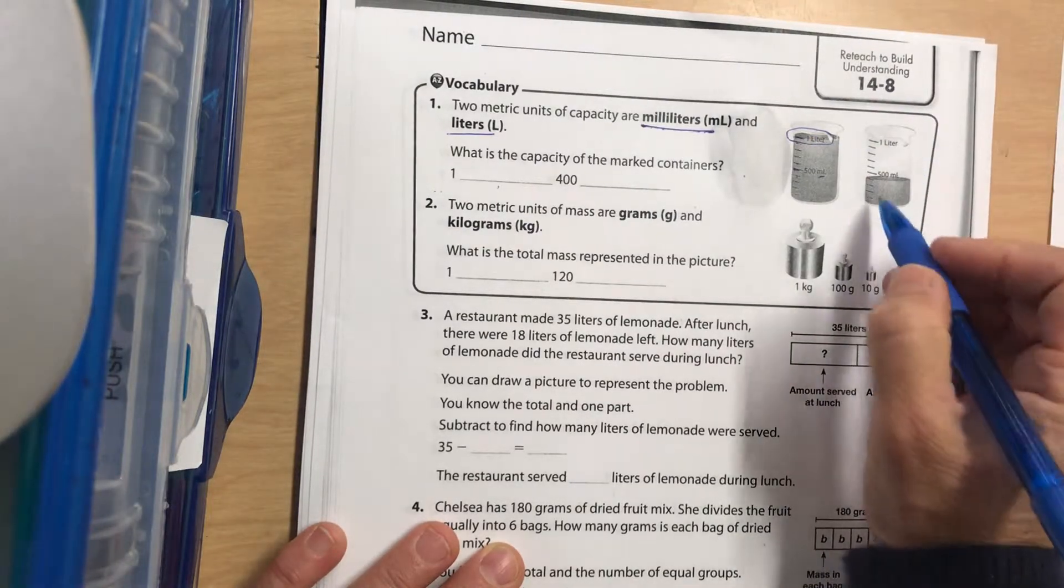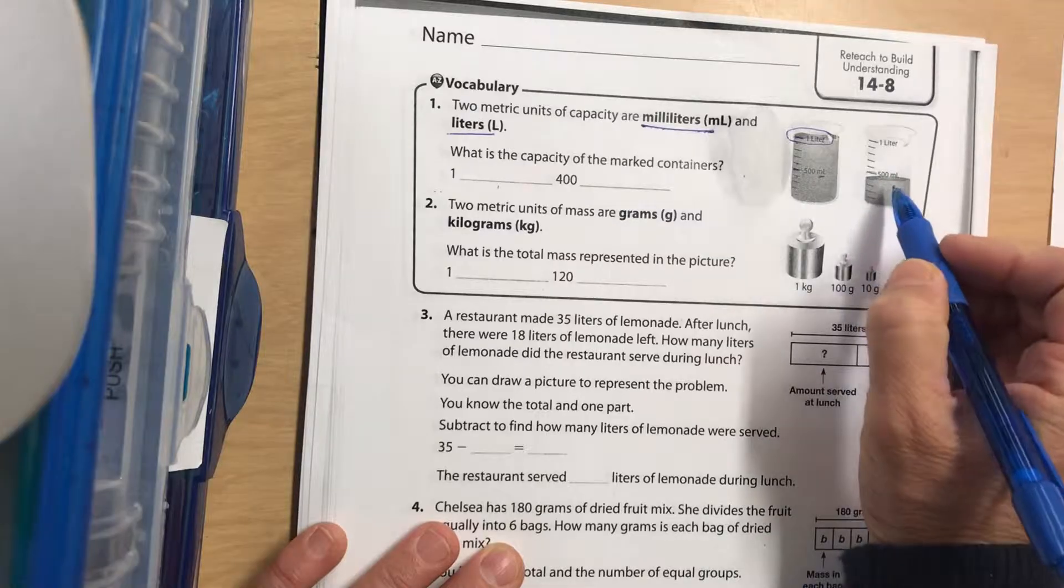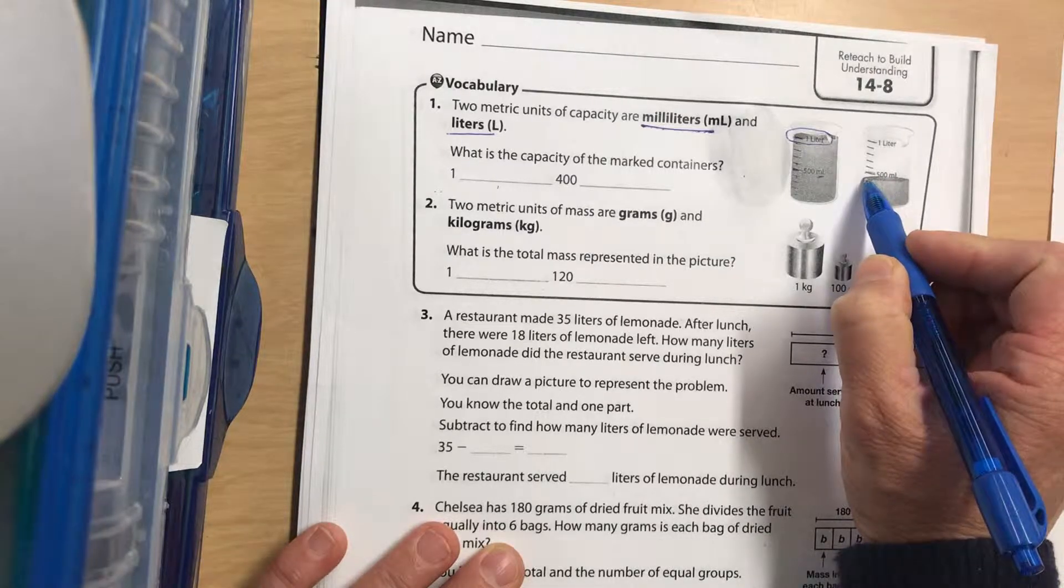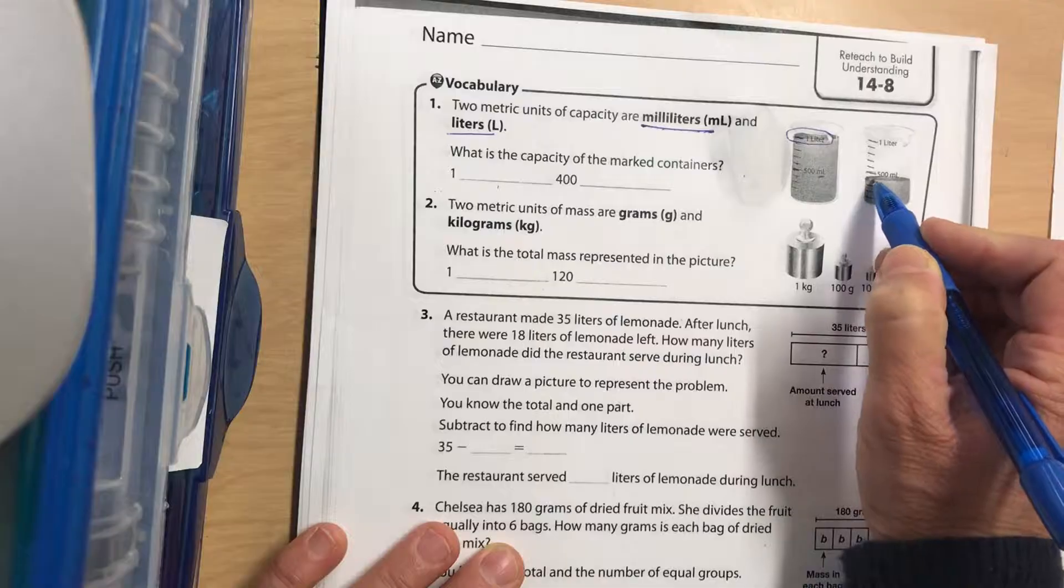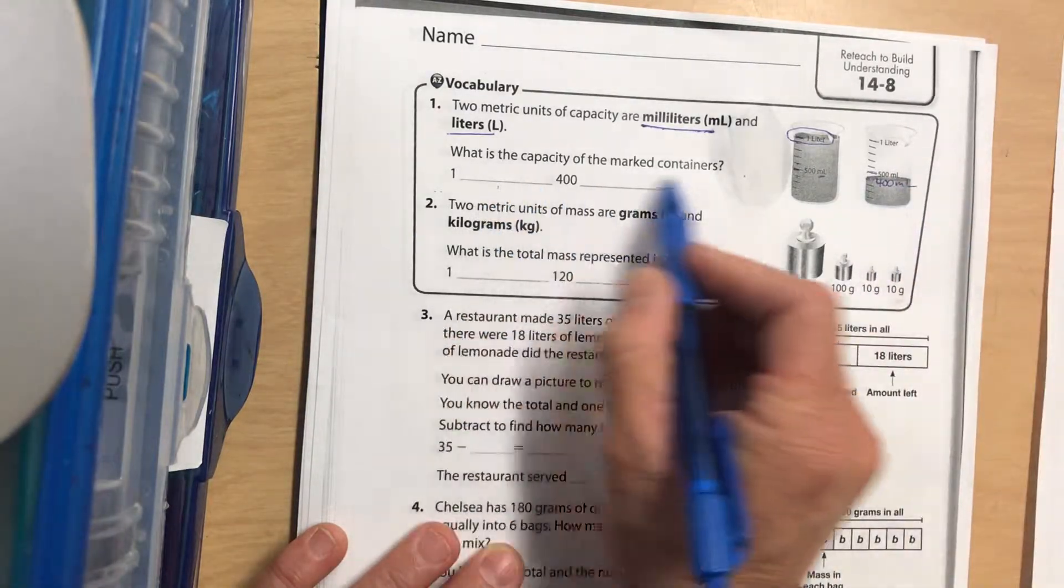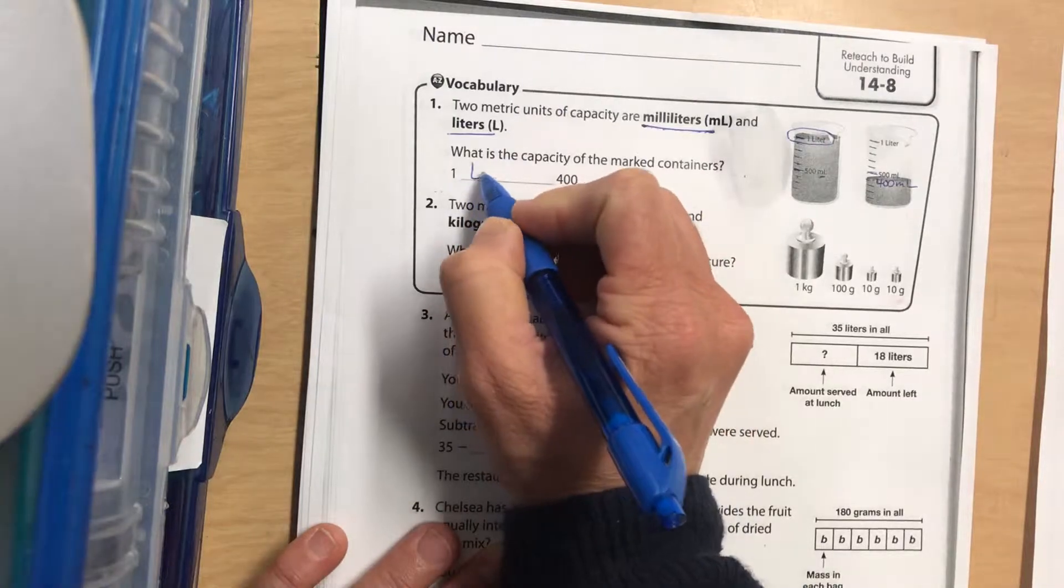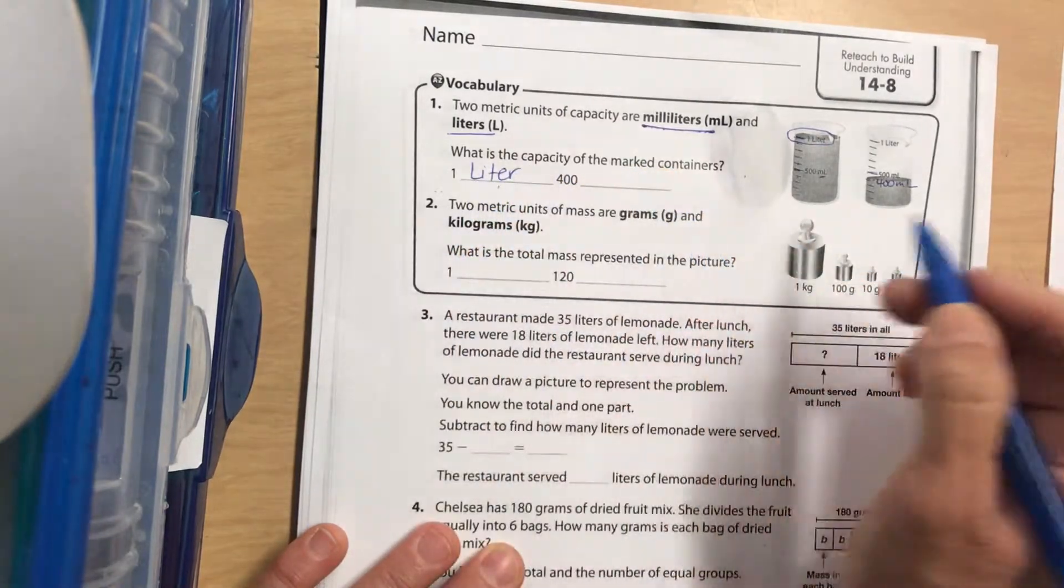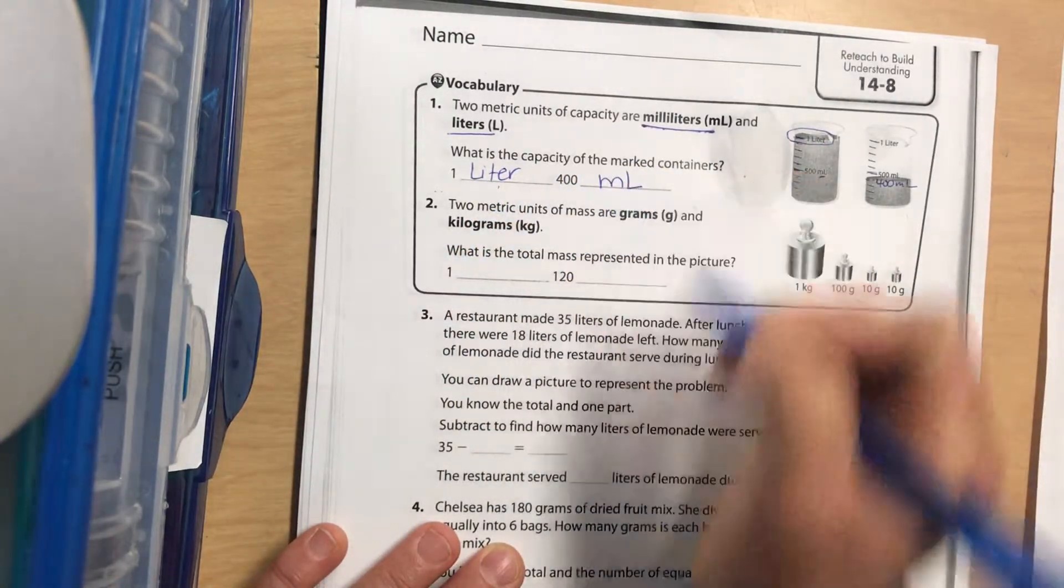This one is at the notch right below 500, so that should be 100, 200, 300, should be 400 milliliters. So the capacity of the marked container is one liter and 400 milliliters.